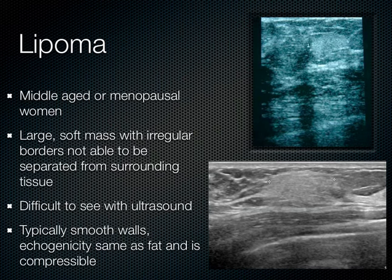Lipomas occur more often in menopausal or middle-aged women — large, soft masses with irregular borders that are difficult to separate from surrounding tissues. They're difficult to see on ultrasound because they have the same echogenicity as fat, so you have to really strain your eyes. They usually have smooth walls. When you compress them, they're easily compressible.